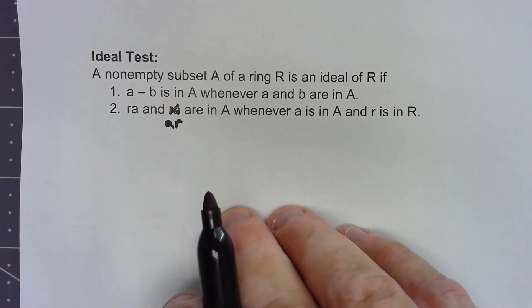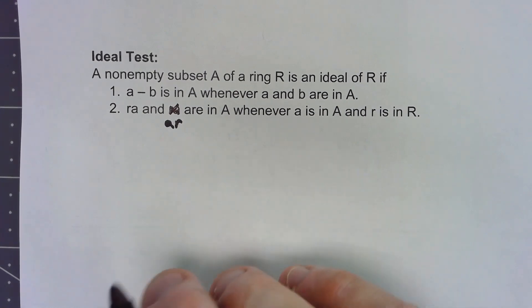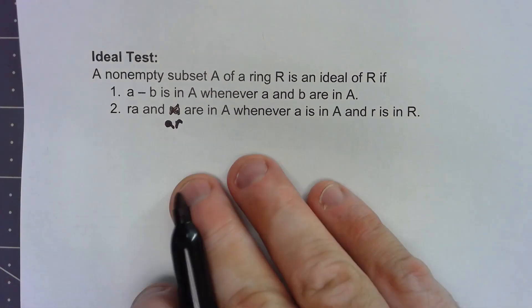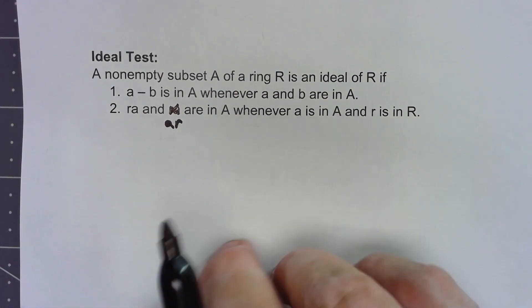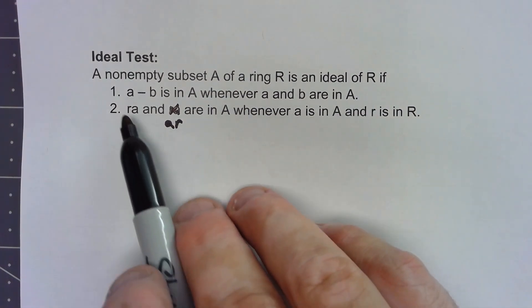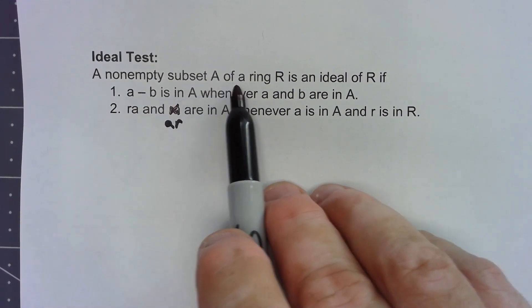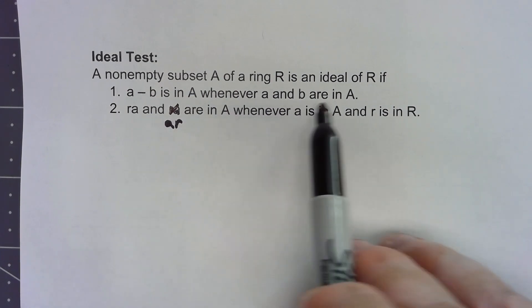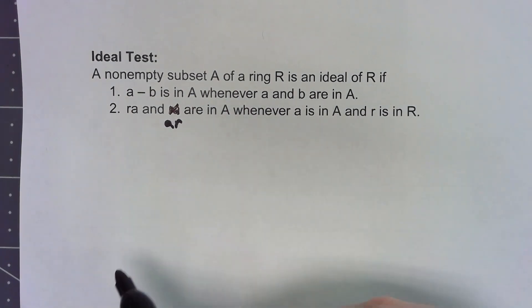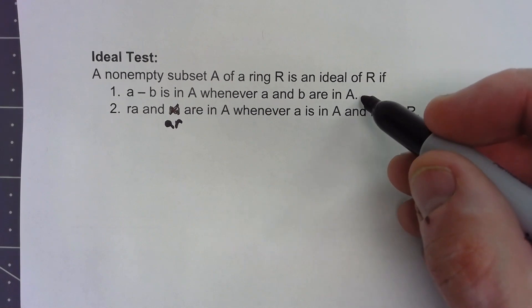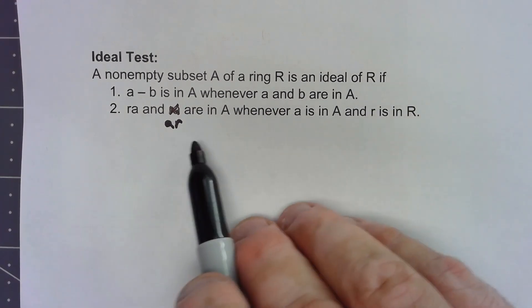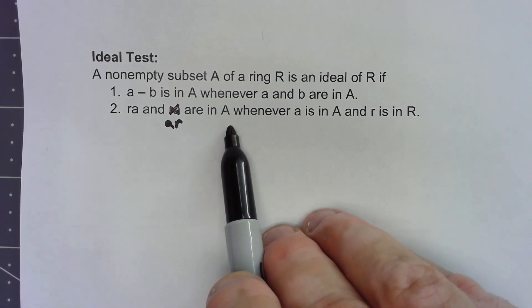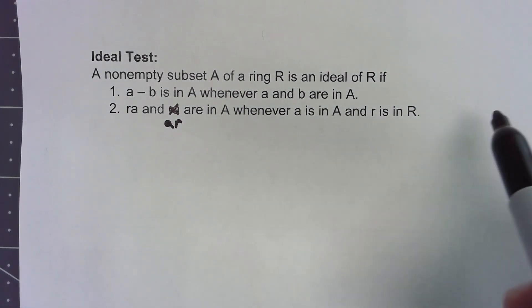It helps to have an easy way of checking whether a subset is an ideal or not. A non-empty subset A of a ring R is an ideal of R if A minus B is in A whenever A and B are in A — that's very much like our subring test — and then we check the absorption property: RA and AR are in A whenever A is in A and R is in R.